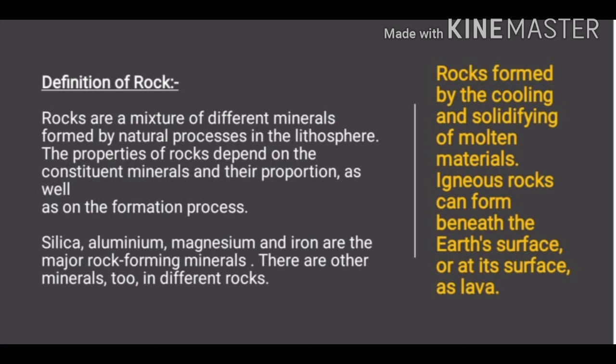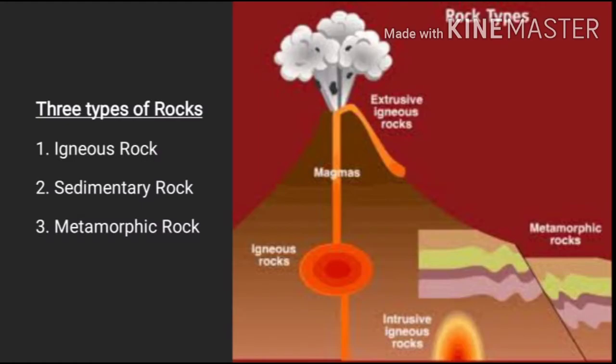There are other minerals too in different rocks. Do you know how rocks are actually formed? Rocks are formed by the cooling and solidifying of molten materials. Igneous rocks can form beneath the earth's surface or at its surface as lava. There are three types of rocks according to their formation process: igneous rocks, sedimentary rocks, and metamorphic rocks.